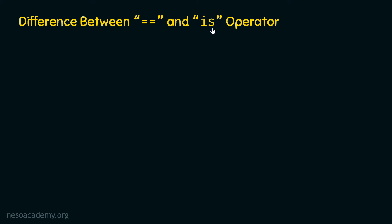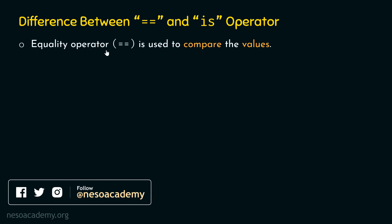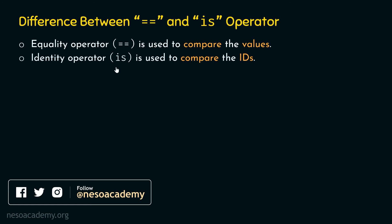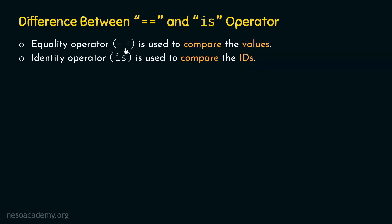What is the difference between these two operators? The equality operator `==` is used to compare values, while the identity operator `is` is used to compare IDs. The `==` operator returns true when the values are the same — the operands themselves are compared, not their IDs. On the other hand, `is` returns true when the operands have the same ID, not when the operands' values are the same.